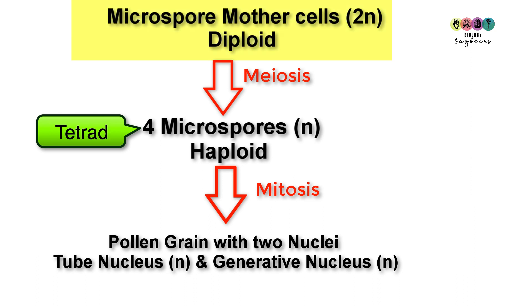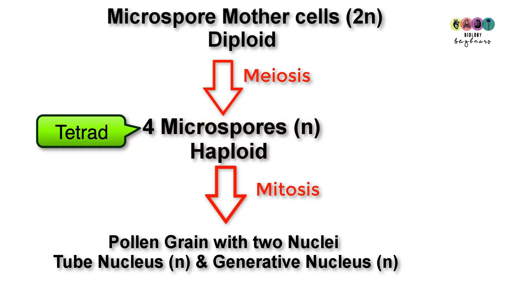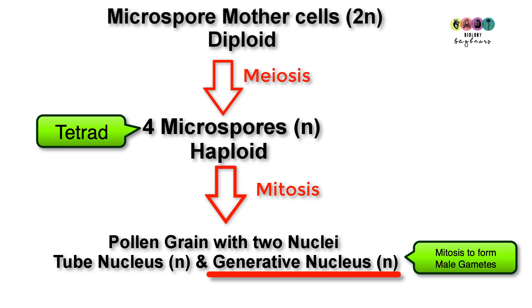You could start off with those microspore mother cells that are diploid. Each one can undergo meiosis to produce a tetrad of four microspores, each of which are haploid. Eventually the tetrad breaks apart and each one of those microspores can undergo mitosis to form a pollen grain with two haploid nuclei — the tube nucleus and the generative nucleus. It's that generative nucleus that will undergo mitosis eventually to form those male gametes.